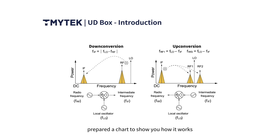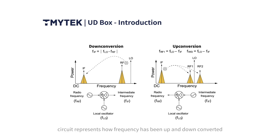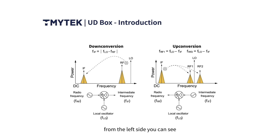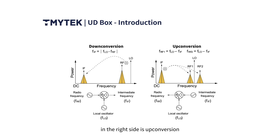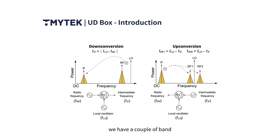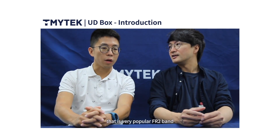I have prepared a chart to show you how it works. You can see it's a very engineering diagram. The circuit represents how frequency has been up and down converted — the symbol with a circle is the mixer. It's really the central part of frequency conversion. From the left side, you can see it's down conversion: the frequency is down-converted from RF to IF, so we can sample the IF signal and feed it into baseband processing. On the right side, it's up conversion — the direction is from IF to RF. In our case, IF is something like 2 to 3 GHz. For millimeter wave, we have a couple of bands; the first band supported in the iPhone 12 is around 28 GHz, which is a very popular FR2 band.